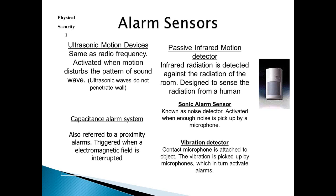A vibration detector is nothing more than a contact microphone attached to an object — any sound while that thing is activated will sound an alarm. A capacitance alarm system, referred to as a proximity alarm, is triggered when an electromagnetic field is interrupted. That's our old balanced magnetic switches.